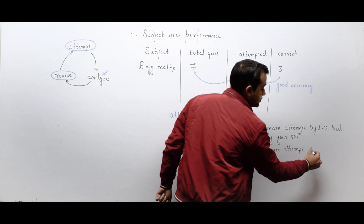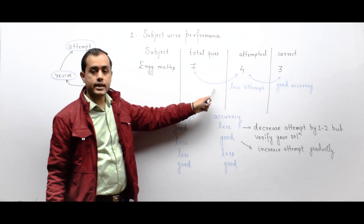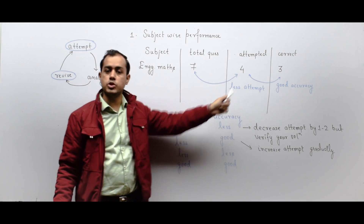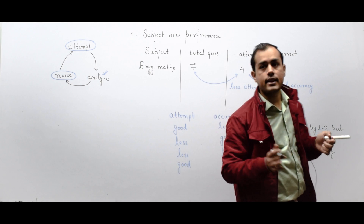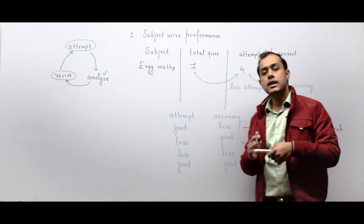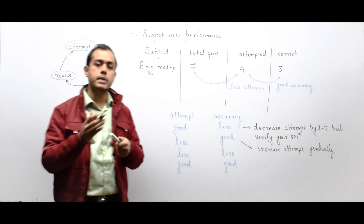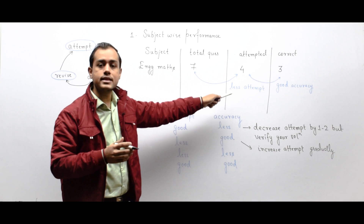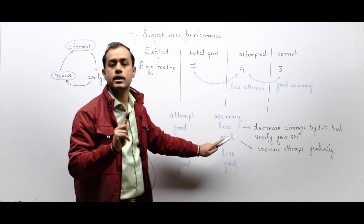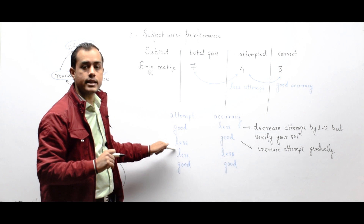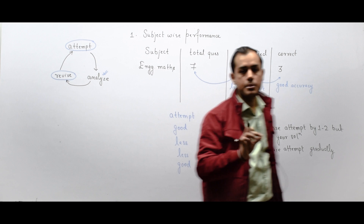If attempt was less — say I attempted four out of seven — next time target five. Do not suddenly target seven out of seven; such a major change is not practically possible. Increase your attempt gradually by one or two problems while maintaining the same level of accuracy. Do not let your accuracy suffer because of attempt.